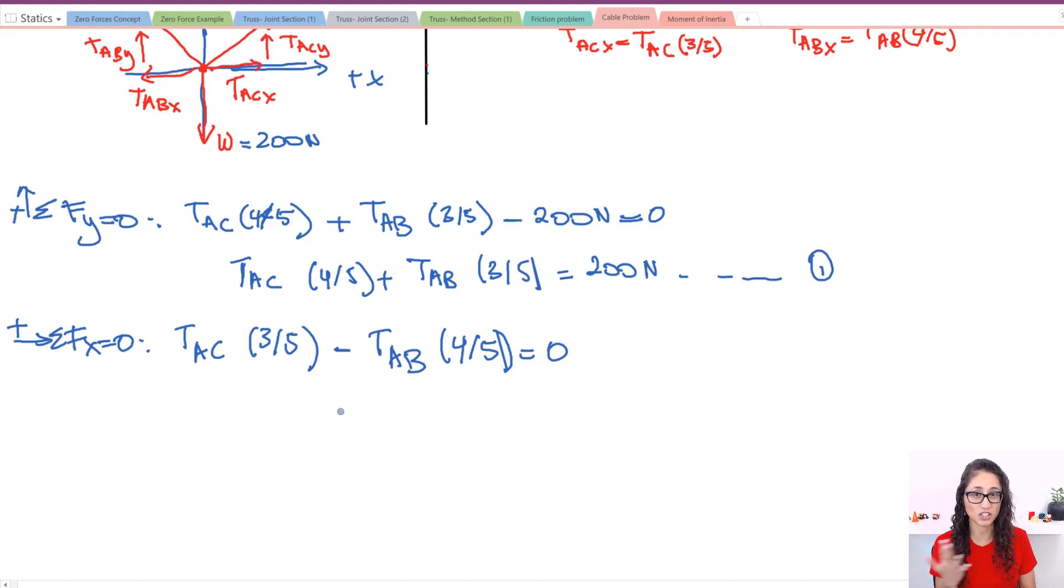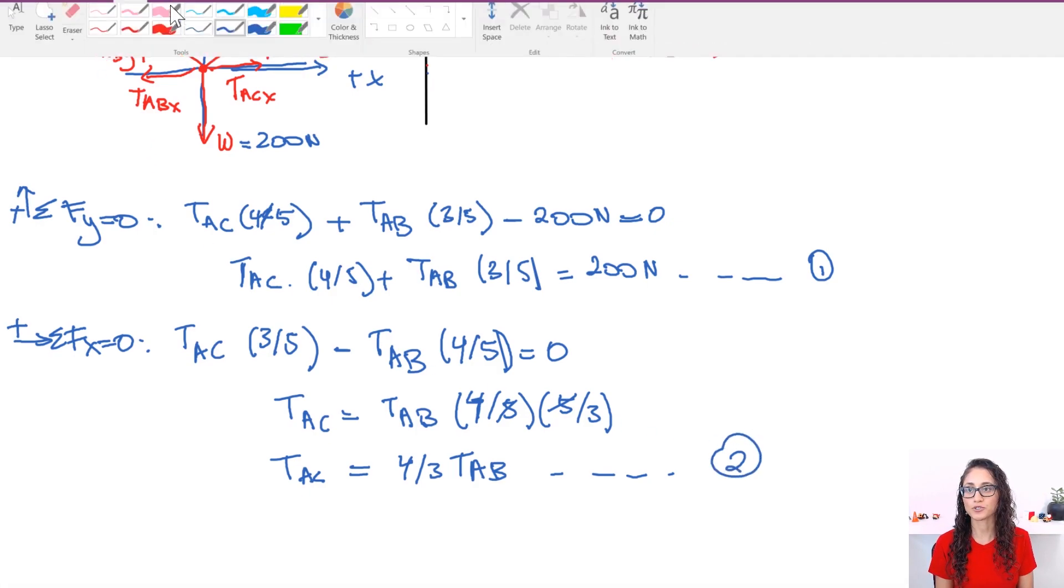But the thing is, we're just looking for TAB, so to save time, we don't really care about the tension in AC. All we need is to solve for TAC and then substitute TAC with TAB, and that way you're going to have all the terms in TAB. So you'll have only one unknown and you can easily solve it. So I have TAC equals TAB—because I took it to the other side—times four over five times five over three. Five cancels with five, so I'm left with four over three times TAB. This is TAC. Let's call this equation two.